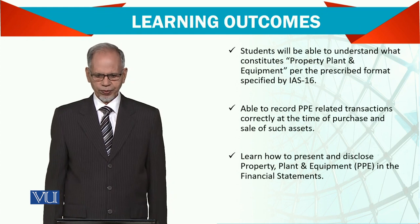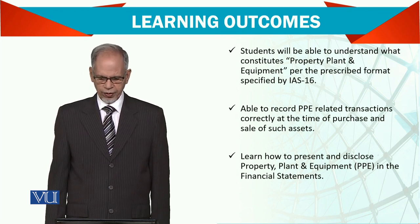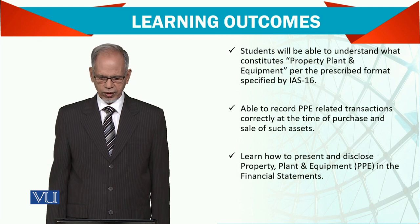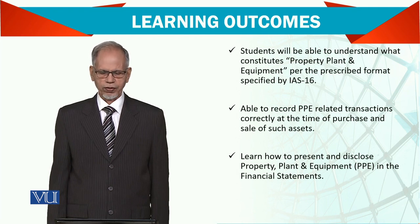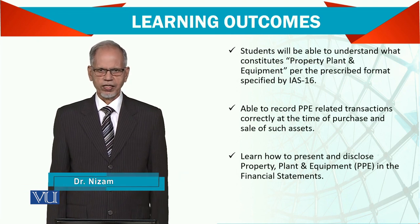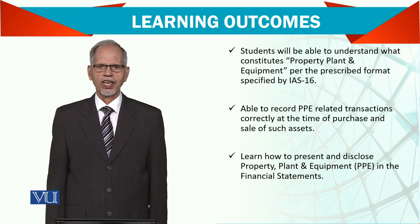First of all, the learning outcome. Students will be able to understand what constitutes property, plant and equipment per the prescribed format specified by IAS 16. They will be able to record property, plant and equipment related transactions correctly at the time of purchase and sale of such assets, and learn how to present and disclose property, plant and equipment in the financial statements. It's not only in the balance sheet — it affects the income statement and cash flow statement as well.